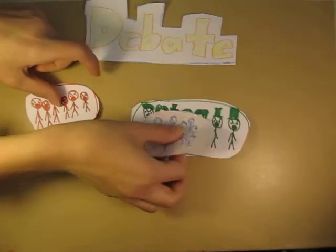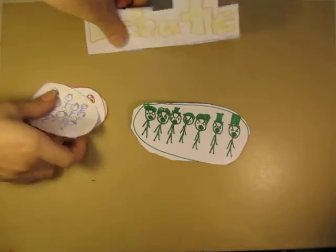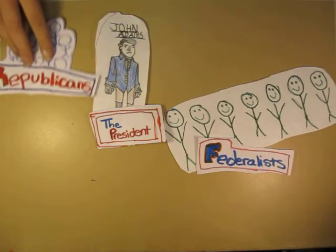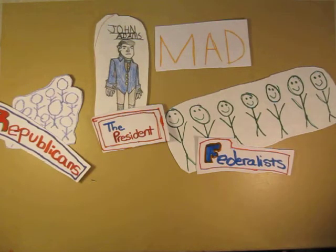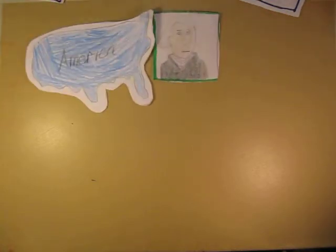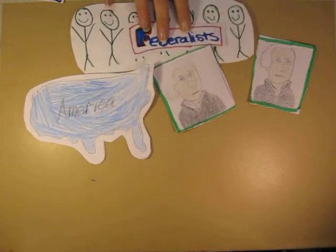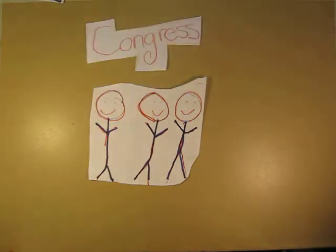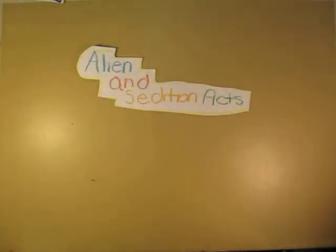Have you ever been in a serious debate where no one is coming to an agreement? Something like this happened to John Adams when the Federalists and Republicans harshly criticized him and the government because of Adams' strength in the military. Republicans like James Madison verbally attacked the Federalists until the Federalists came right back and attacked the Republicans. The Federalists argued that the Republicans were being disloyal to their country. This caused the Federalists that controlled Congress to create the laws called the Alien and Sedition Acts in 1798 to get back at the Republicans for being disloyal.